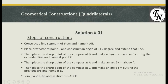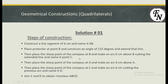The steps of construction are: first, construct a line segment of 6 cm and name it AB. After that, place a protractor at B and construct an angle of 115 degrees from point B. Then place the sharp point of the compass at B and make an arc of 6 cm, because BC is also 6 cm since all sides are equal. Join the 115-degree mark and this arc, and you will have AB and BC formed.